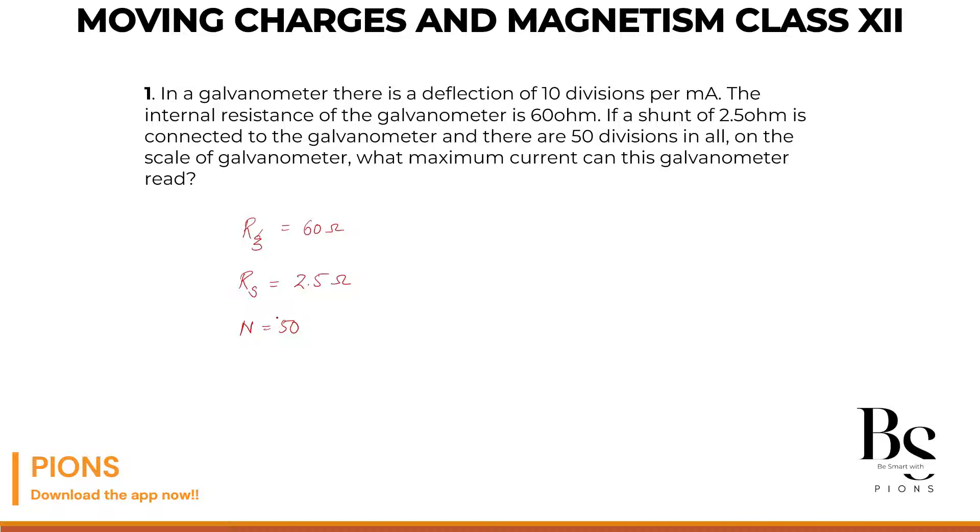So what we will do here is, first of all, we know there are 50 divisions. As per the question, the galvanometer has 50 divisions in all. So if there are 50 divisions, what is the current through the galvanometer? It says 10 divisions per milliamps.